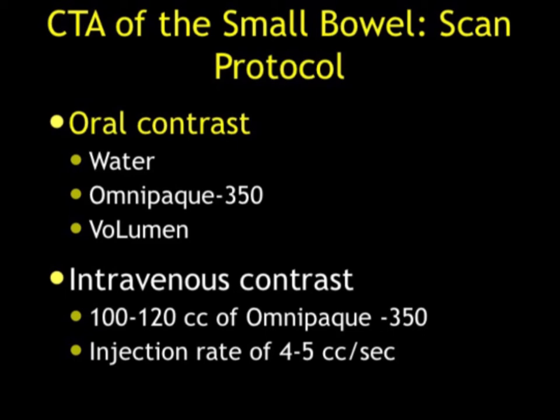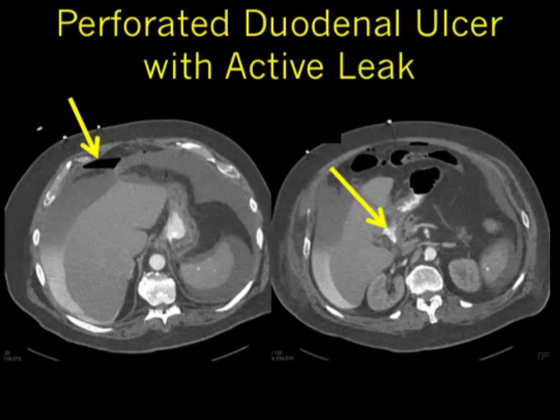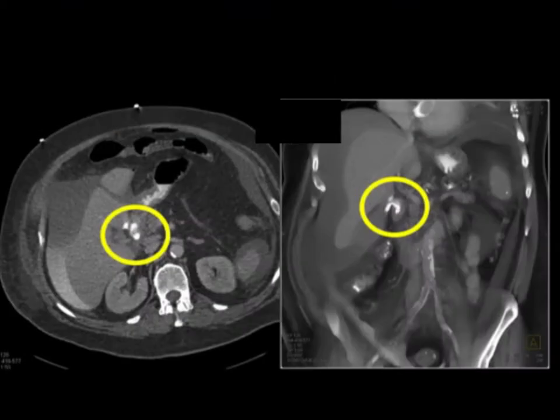On the topic of water versus positive contrast: if you're looking for perforation, you use positive contrast — we use oral Omnipaque. If you can't give IV contrast, we also use oral Omnipaque. In this case, you can see the patient has a perforation from the duodenum. You see the pneumoperitoneum very nicely. A very easy example of where positive contrast works oh so nicely.